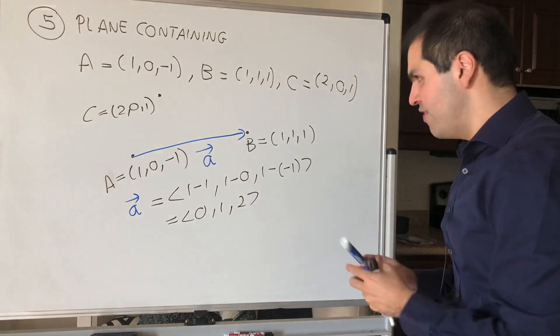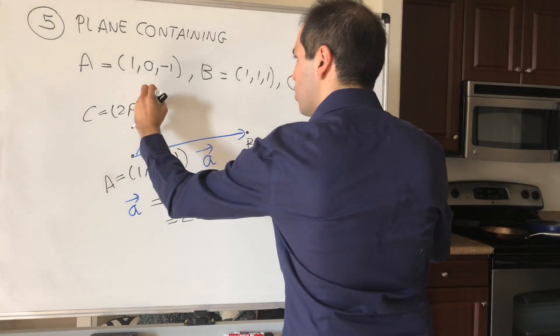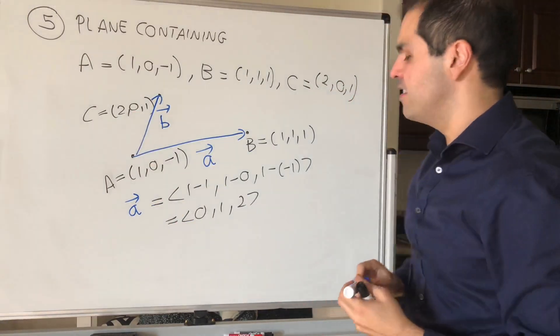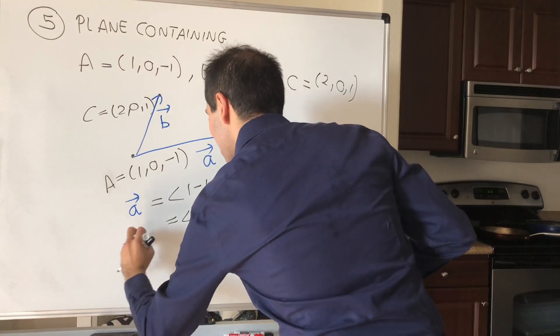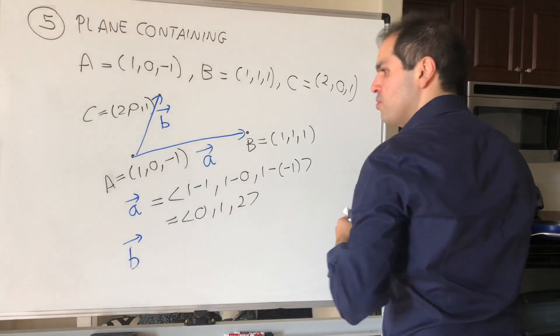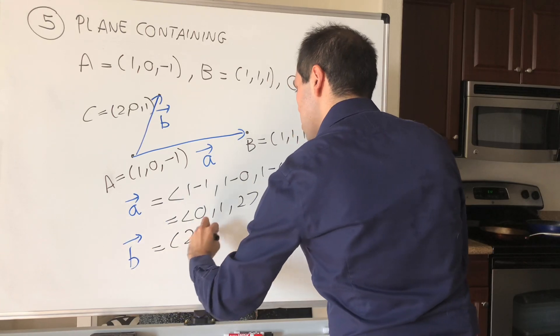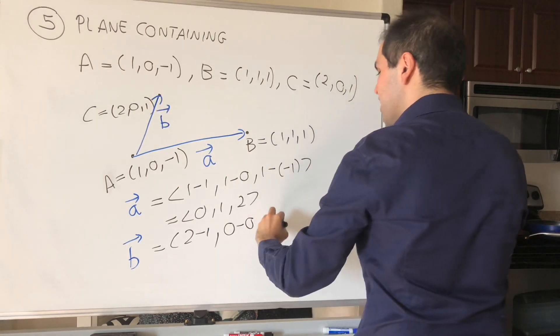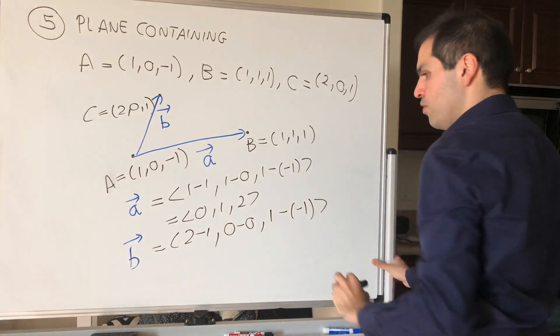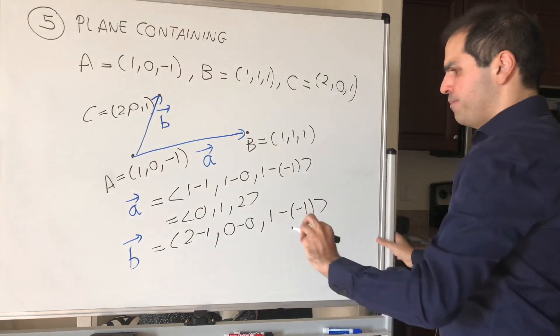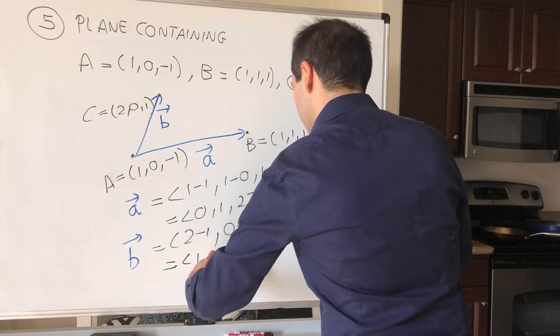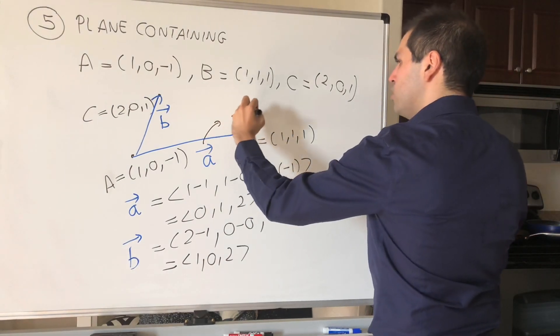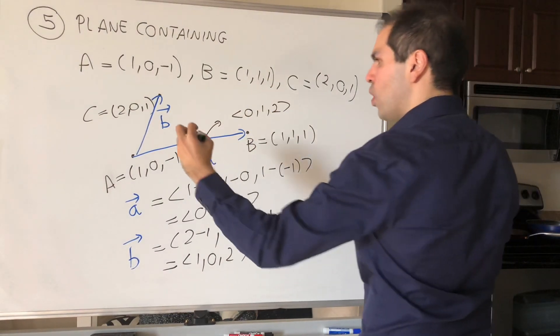On the other hand, let's find a vector b, so which just connects a and c, which, again, you just get by c minus a. So this becomes 2 minus 1. So this point minus this point, 0 minus 0, and lastly, 1 minus minus 1, which I think becomes, in this case, (1,0,2). So you have those two vectors. a was (0,1,2), and b was (1,0,2).